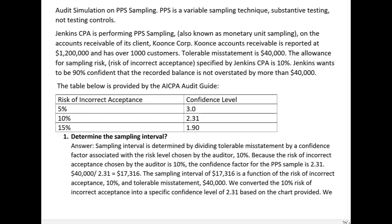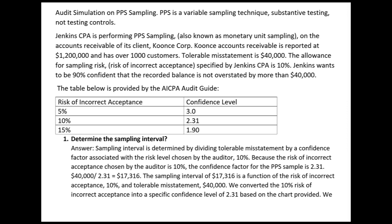Here's a sim on PPS sampling. PPS is a variable sampling technique, and when you hear the term variable sampling, it means we're doing substantive testing, not testing controls. You do sampling when you test controls also, but that's called attribute sampling. Here we're doing variable sampling, and specifically PPS sampling. PPS is performed when the auditor expects a low error rate and the fear is overstatement.